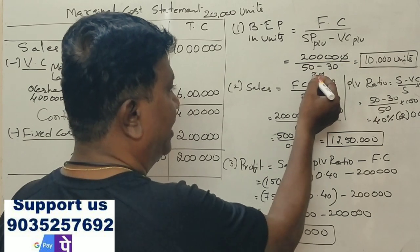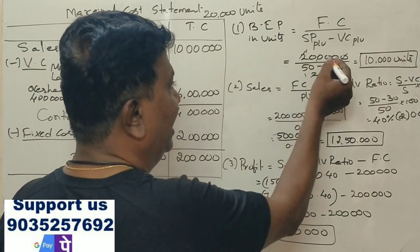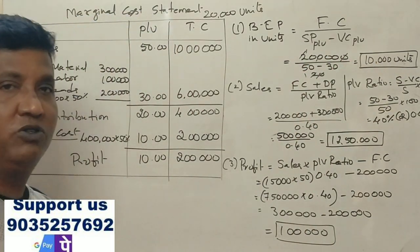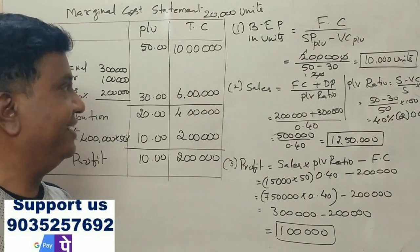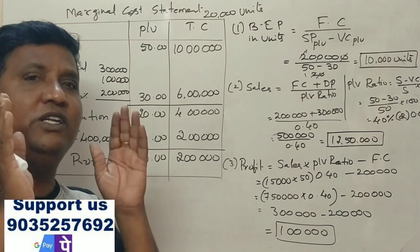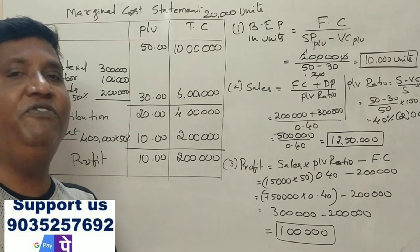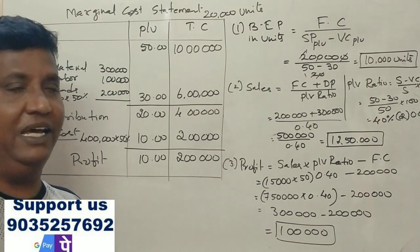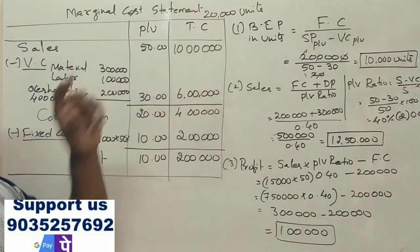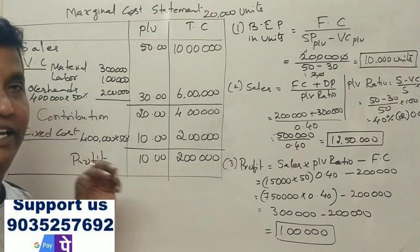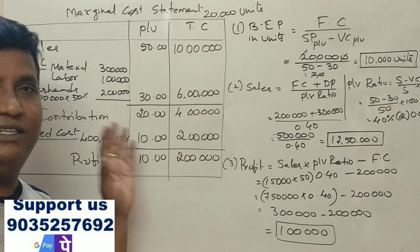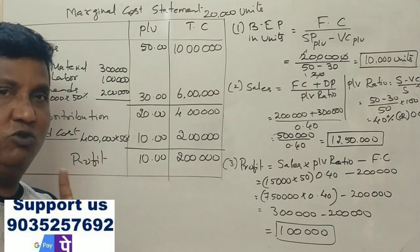The answer is 10,000 units. If you want 10,000 units, you can get no loss, no profit. And if you want 20,000 units, it'll be 2 lakhs profit. This is the first question.